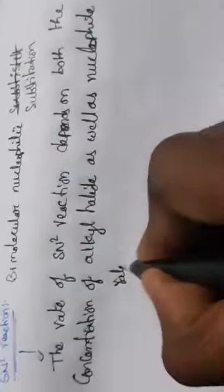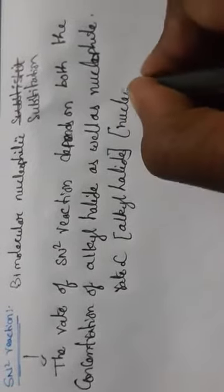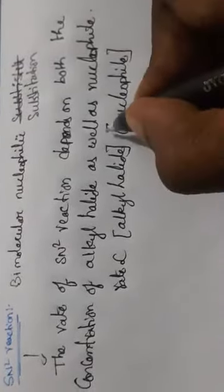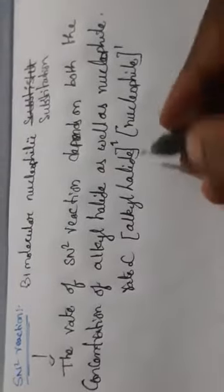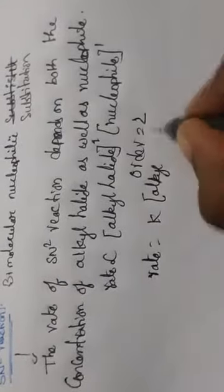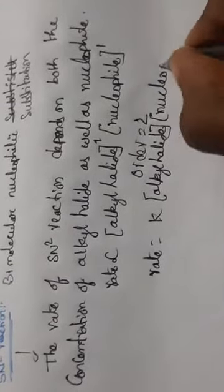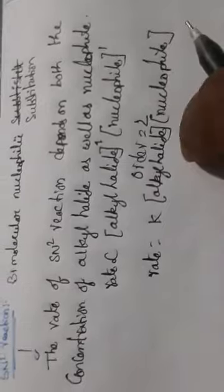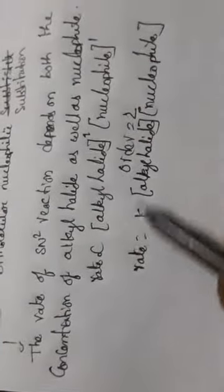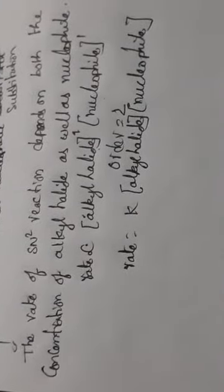So the rate is directly proportional to the concentration of alkyl halide and also nucleophile, each with order one. So the overall order equals 2. That means: Rate = K [alkyl halide][nucleophile]. This is the rate expression for SN2 reaction.